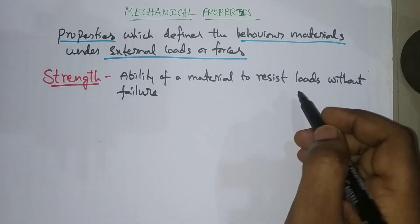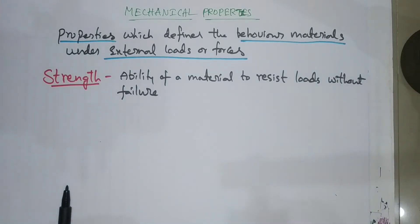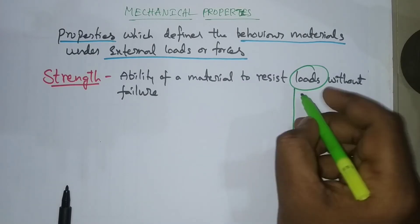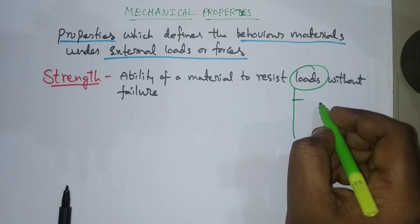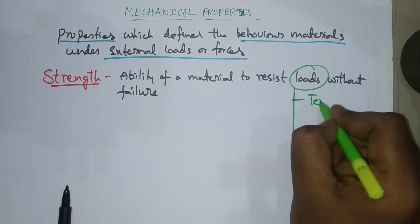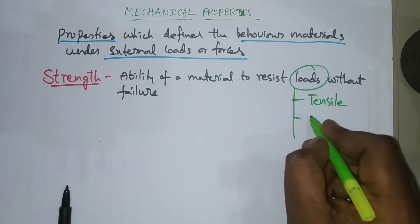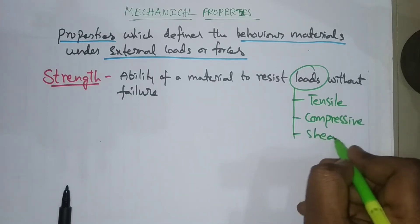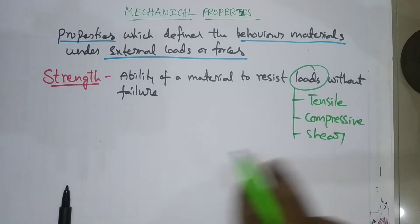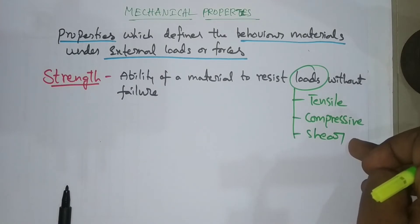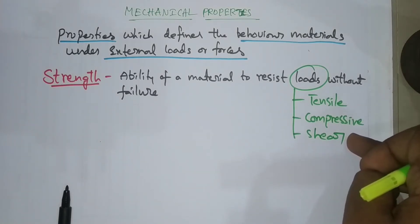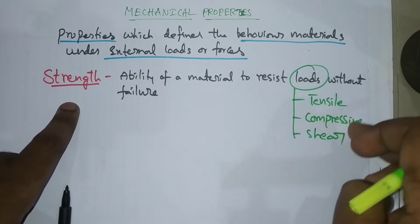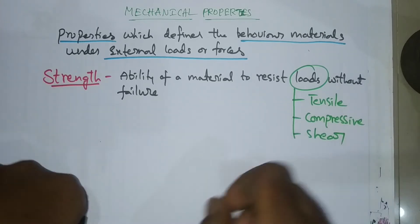There are three types of loads: tensile, compressive, and shear. Corresponding to each load type, there are three types of strength: tensile strength, compressive strength, and shear strength.